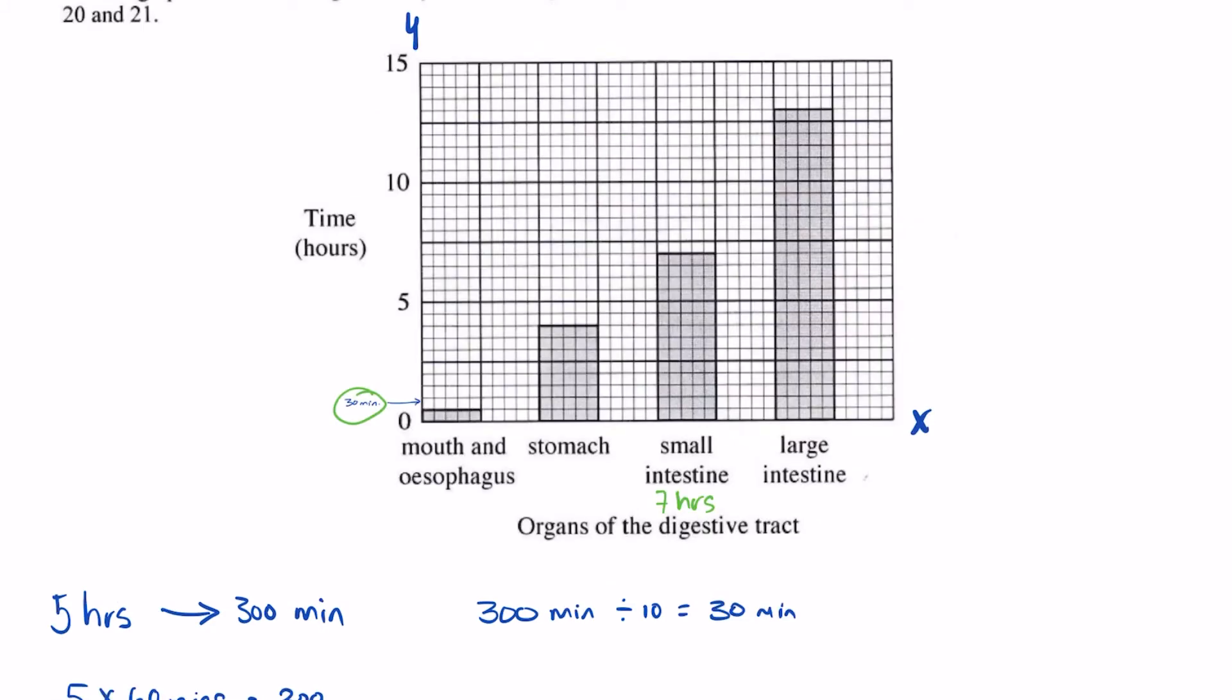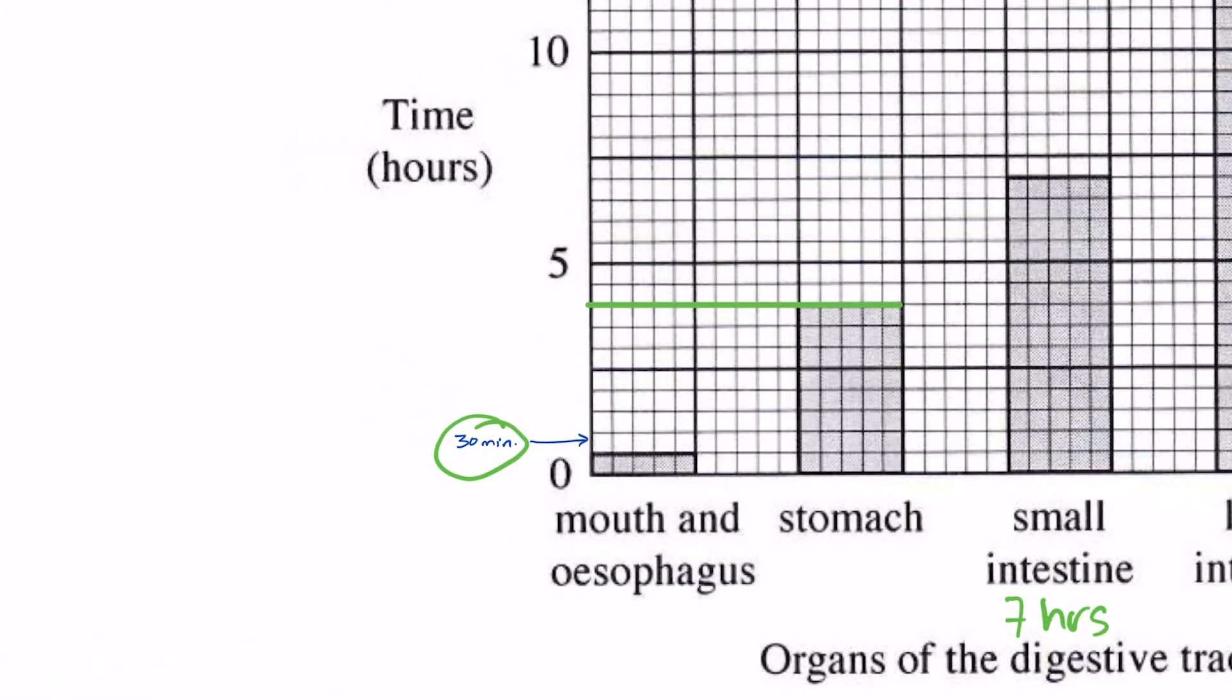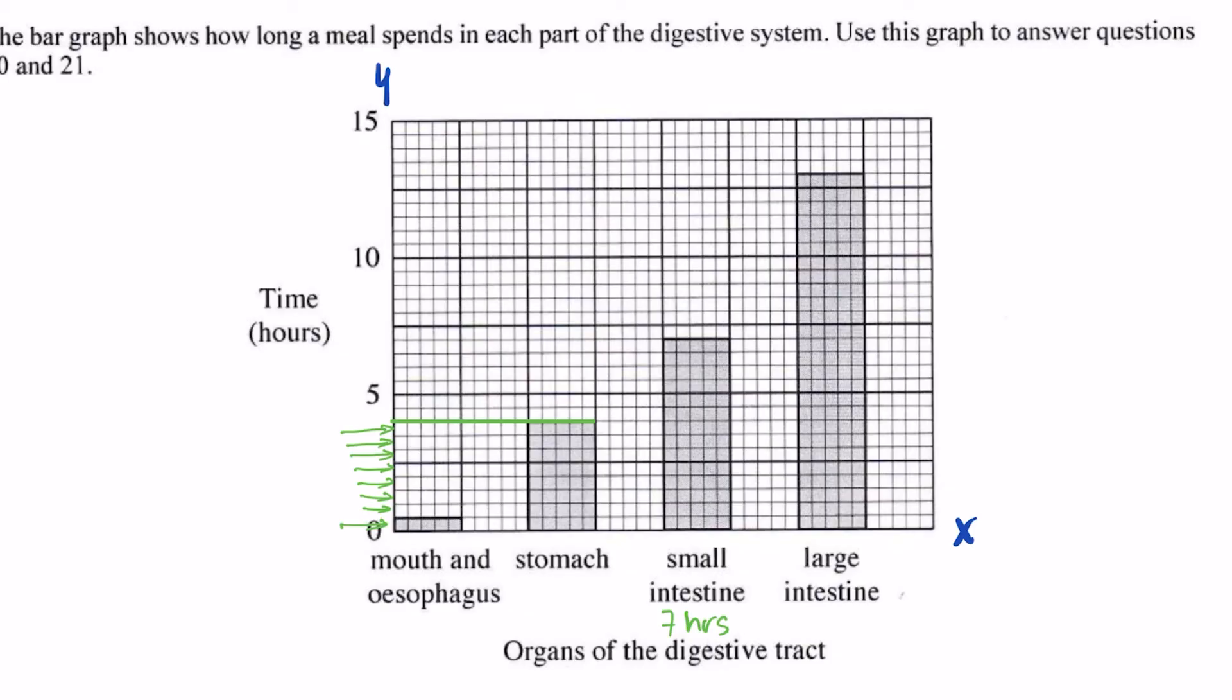Now let us look at the time spent in the stomach. So we'll draw a line from the top of the bar of the stomach towards the y-axis. And now we're going to count by the half hour from zero until we get to that line. So let's get started. We have here half hour, one hour, one hour and a half, two hours, two and a half hours, three hours, three and a half hours, four hours. So the food spends four hours in the stomach.